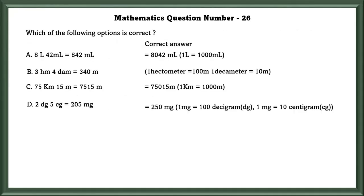Mathematics question number 26. Which of the following options is correct? In option A, 1 litre is equal to 1000 ml, and the correct answer is 8042 ml, but they have given 842 ml. So, this is wrong.